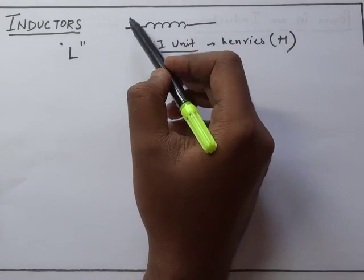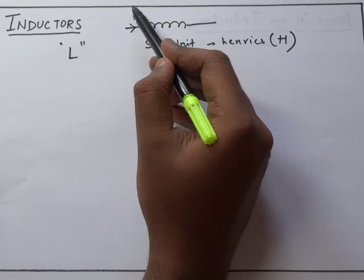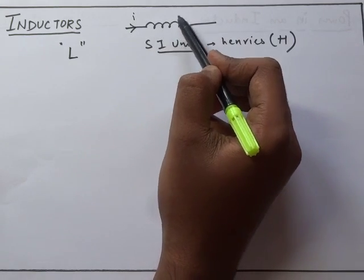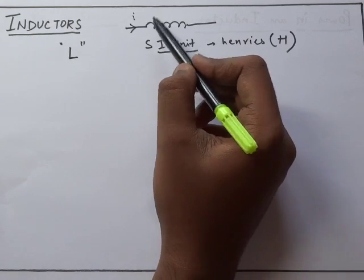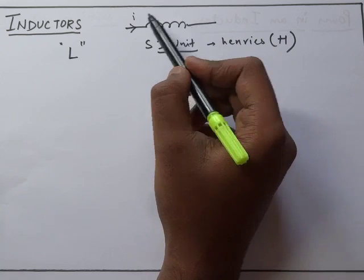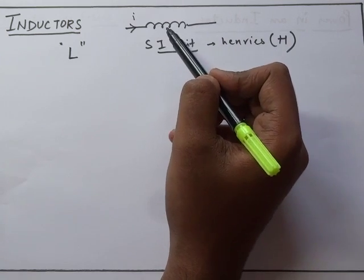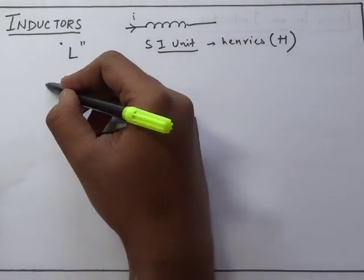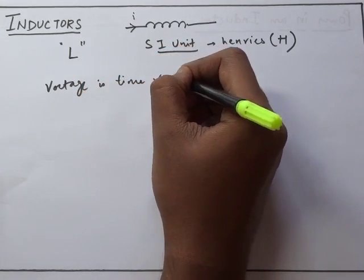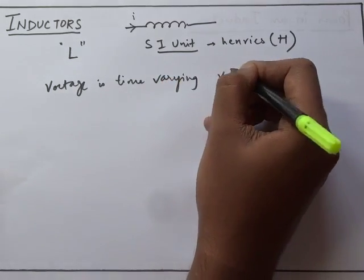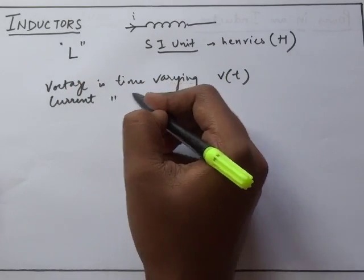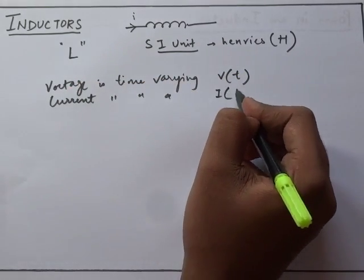An inductor is an element in which energy is stored in the form of electromagnetic field. When an electric current, suppose current I, is passing here, a magnetic field is created. This magnetic field helps to store electrical current for a short period of time even after the supply is removed. In case of an inductor, the voltage is time varying, so I can write it as V(t), and similarly current is also time varying, hence I(t).